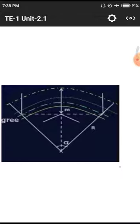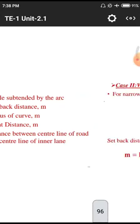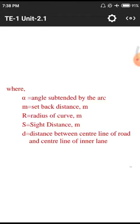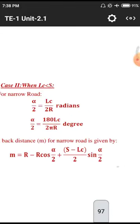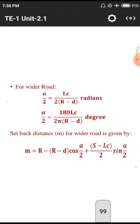In the diagram, alpha is the angle made by the two lengths of the curves, and m is the mean distance from the outermost curve. The dotted lines represent the center line with respect to the road, and m is measured from the center line. The variables used are alpha, m, R, S, and D — angle, setback distance, radius, sight distance, and others. For narrow roads and wider roads we have two classifications. The formula for setback distance is: m = R − (R − D)·cos(α/2) + (S − C)/2 · sin(α/2).